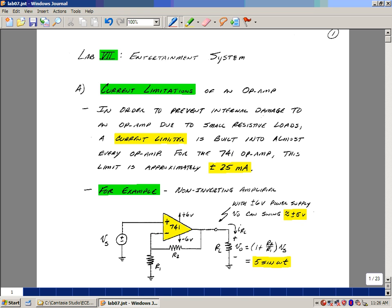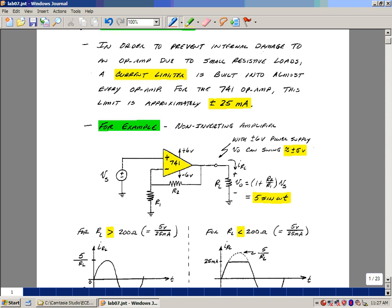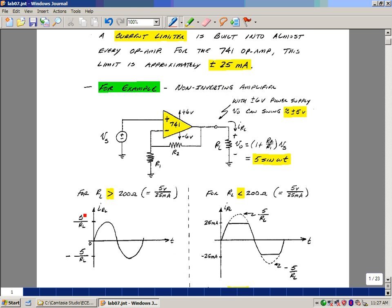Let's look back at our non-inverting amplifier. The gain here is 1 plus R2 over R1. So if I hook up an input here, the output's going to be 1 plus R2 over R1 times V sub S. In this lab, we're going to use a plus and minus 6 volt power supply, mostly to limit the voltage across the speaker so we don't melt the transistors we're going to add. With the plus and minus 6 volt power supply, you can swing a clean sine wave out to about plus or minus 5 volts.